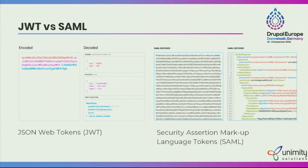JWT versus SAML: The main difference visible in the diagram is the size of the JWT token compared to the SAML token. JSON is a smaller size with the same information, whereas SAML uses XML, so the encoded data is a large amount. JSON parsers are available in all languages, making it easily acceptable. In JSON, you can do direct object mapping, but in XML you cannot do object mapping, making it a little tricky to use with other applications.